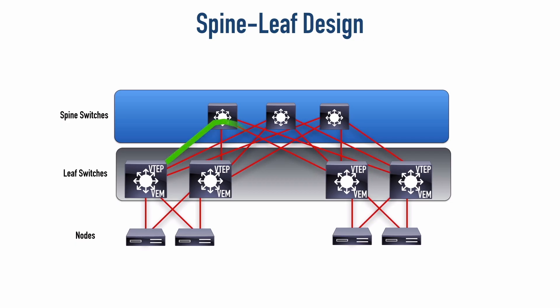Another benefit that VXLANs provide is improved load balancing. When sending traffic over a port channel — where multiple links make up a single logical link — instead of just using one link, the VXLAN switches know how to load balance that traffic across all the different links in the port channel. This can dramatically reduce congestion in the data center.